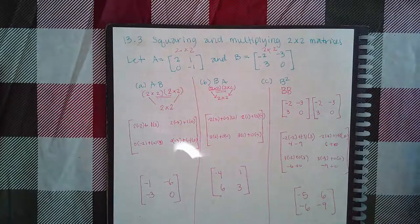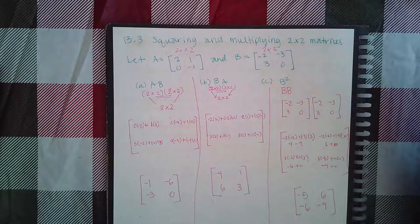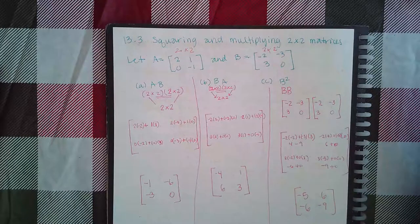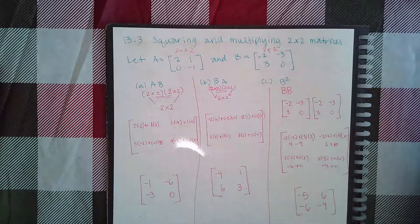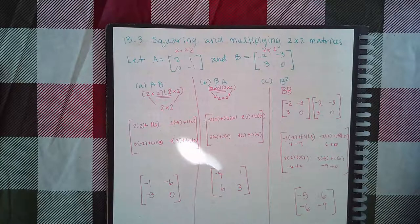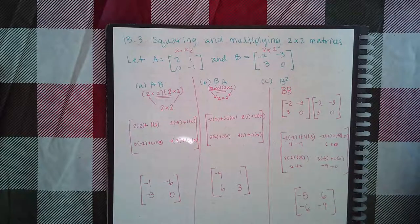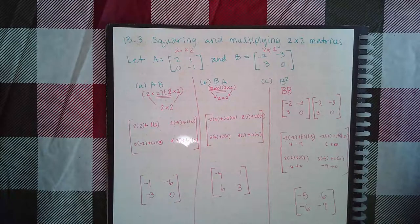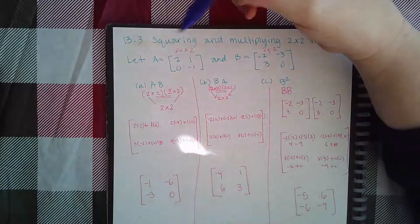Here we have section 13.3 on multiplying two-by-two matrices. They use two-by-two matrices because they are small but still fit all the criteria for matrix multiplication. When multiplying any matrices together, you need to know how to tell whether or not they can actually be multiplied.